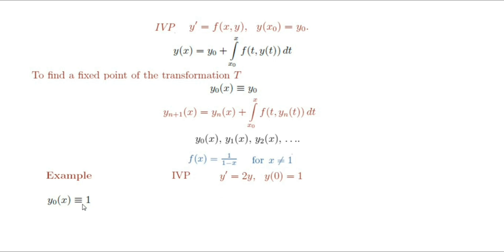Therefore, the Picard iterates are: initial solution y₀(x) equals 1, the first iteration y₁(x) equals 1 plus integral from 0 to x of 2y₀(t) dt, which gives us 1 plus 2x. y₂(x) = 1 plus integral from 0 to x of 2y₁(t) dt = 1 plus integral from 0 to x of 2(1 + 2t) dt, which gives us 1 plus 2x plus (2x)²/2!, and so on.